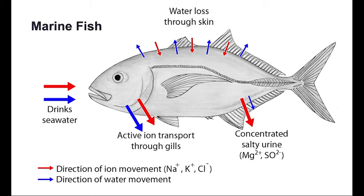But they gain water by drinking. However, seawater is too salty for them. So they secrete salt via the gills to preserve water and produce hardly any urine.